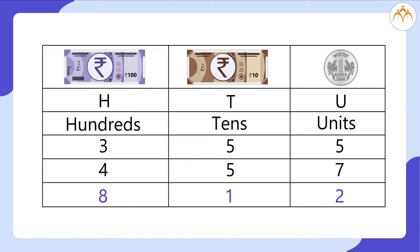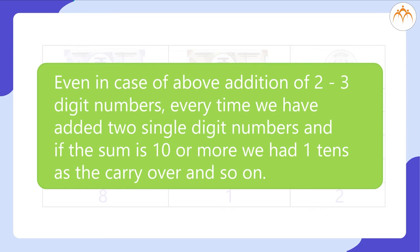As you now know the meaning of carryover, let's quickly see how we add two 4-digit numbers. This time we have the 1,000th place added. It's very important to note that even in the addition of two 3-digit numbers, every time we added two single-digit numbers, and if the sum was 10 or more, we had 1 ten as the carryover and so on. The process of addition remains the same irrespective of the number of digits, and that makes addition super easy.